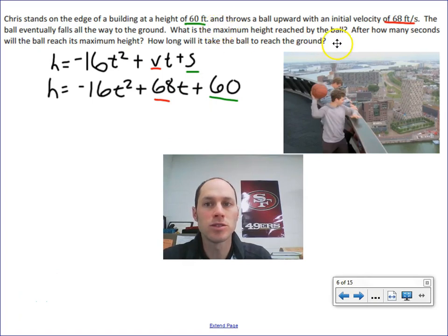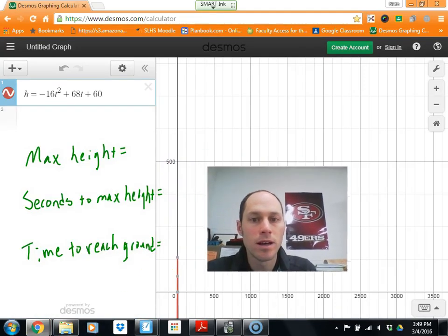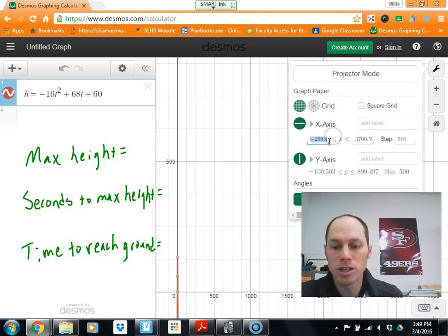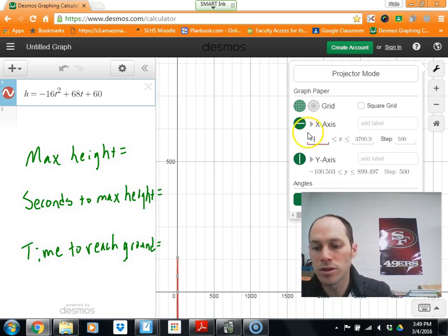If you're ready to take a look at how we can find the answers to these questions, we've got our equation, h equals negative 16t squared plus 68t, since our vertical velocity is 68, plus 60, since 60 is our initial height. The way I solve this, you could have solved it many different ways, but to find the maximum height and how many seconds it takes to reach that, you can find the vertex. And then how long it takes to reach ground, we're looking to find one of the x-intercepts, one of the zeros. So I graph this. If we take a look on Desmos, I enter my equation, h equals negative 16t squared plus 68t plus 60.